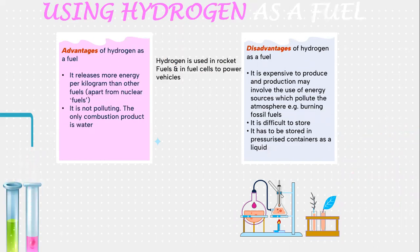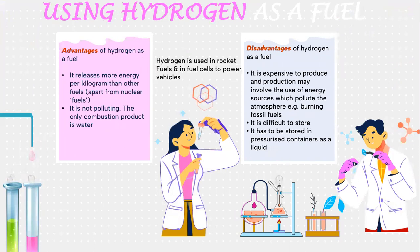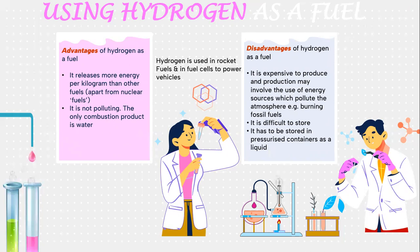Let's look into hydrogen, which is used in rocket fuels and in fuel cells to power vehicles. Advantages of hydrogen as a fuel include: it releases more energy per kilogram than other fuels, apart from nuclear fuels it is not polluting, and the only combustion product is water. Disadvantages include: it is expensive to produce, production may involve energy sources which pollute the atmosphere such as burning fossil fuels, it is difficult to store, and it has to be stored in a pressurized container as a liquid.